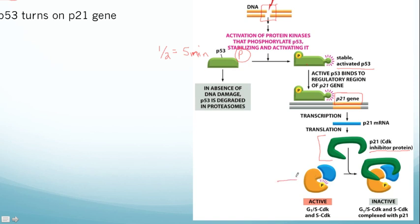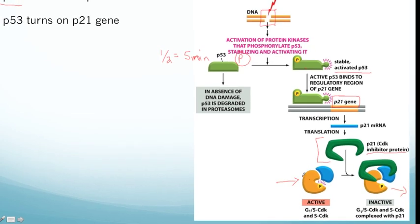So p53 turns on p21, which is the CDK inhibitor protein. Let's say you're in G1 with a G1-S CDK complex getting ready to start replicating DNA, but the cell notices the DNA is damaged and wants to stop replication. p53 is phosphorylated and activated, it turns on the p21 gene, p21 is made, and p21 binds to the CDK complex and completely inactivates it. This stops the cell in G1 until it can repair its DNA. Once the DNA is repaired, the inhibition is removed, and the complex becomes active again to stimulate DNA replication.